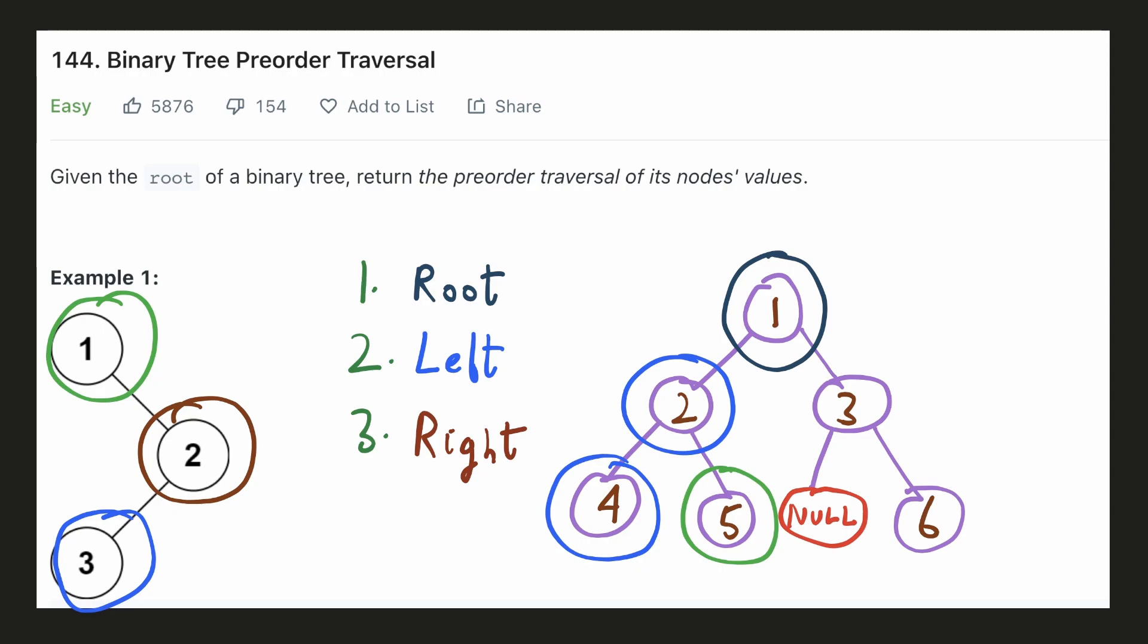For node 2, we have covered both its left and the right subtree, so we'll go back to its parent node 1. Now we'll go to the right subtree of node 1 and this will be the new root. It doesn't have any left child, so we'll directly go to its right child. We'll print its value and now we have covered all the nodes of the binary tree.